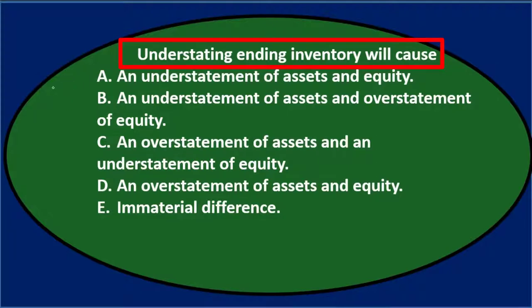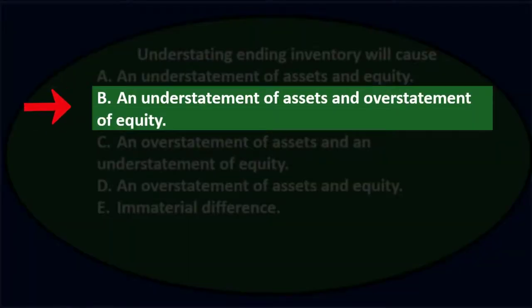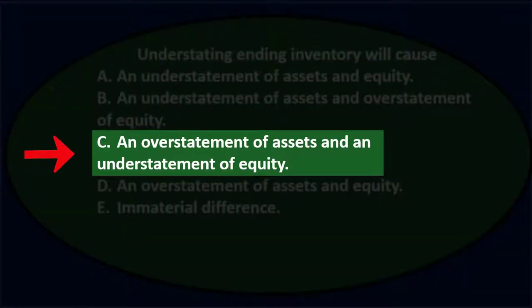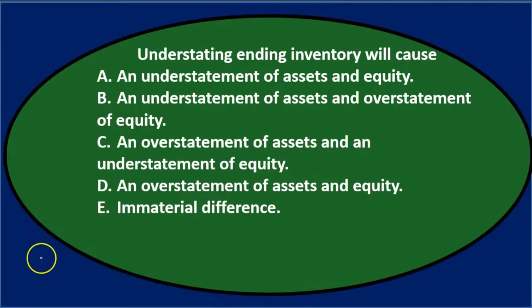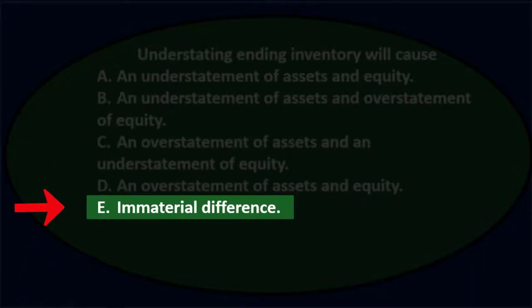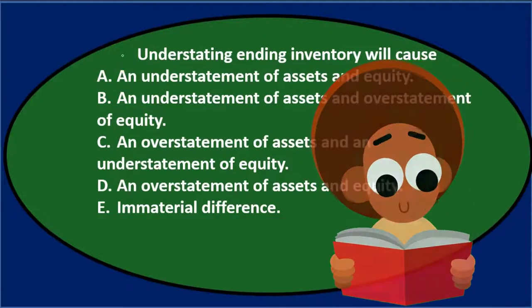Next question: Understating ending inventory will cause — A. An understatement of assets and equity, B. An understatement of assets and overstatement of equity, C. An overstatement of assets and understatement of equity, D. An overstatement of assets and equity, and E. Immaterial difference. We'll go through this and see if we can eliminate some options.